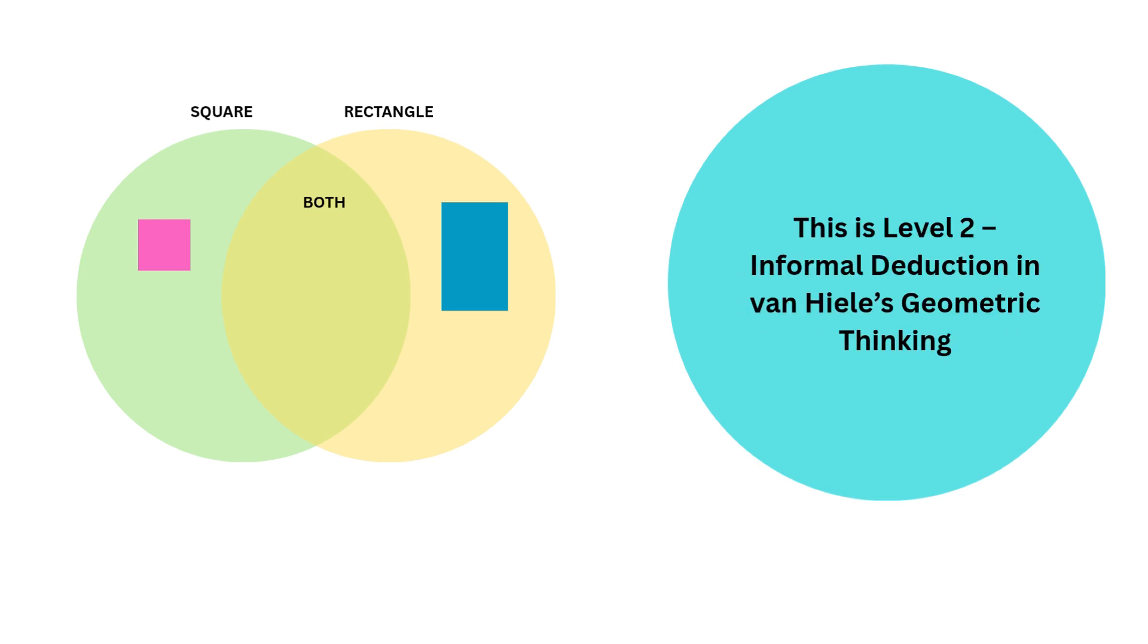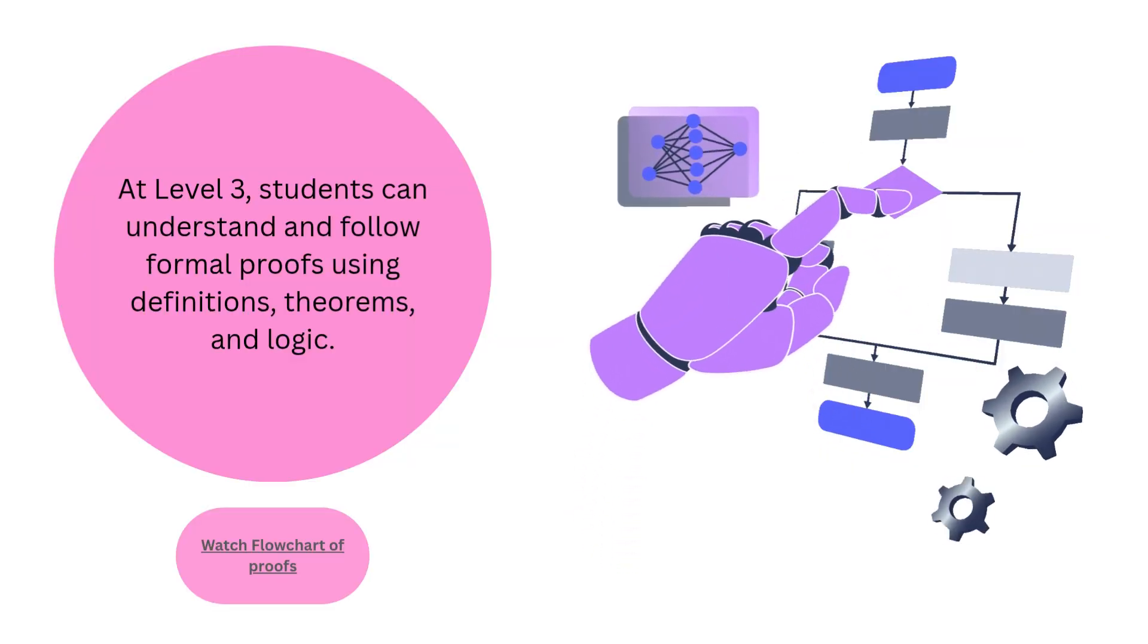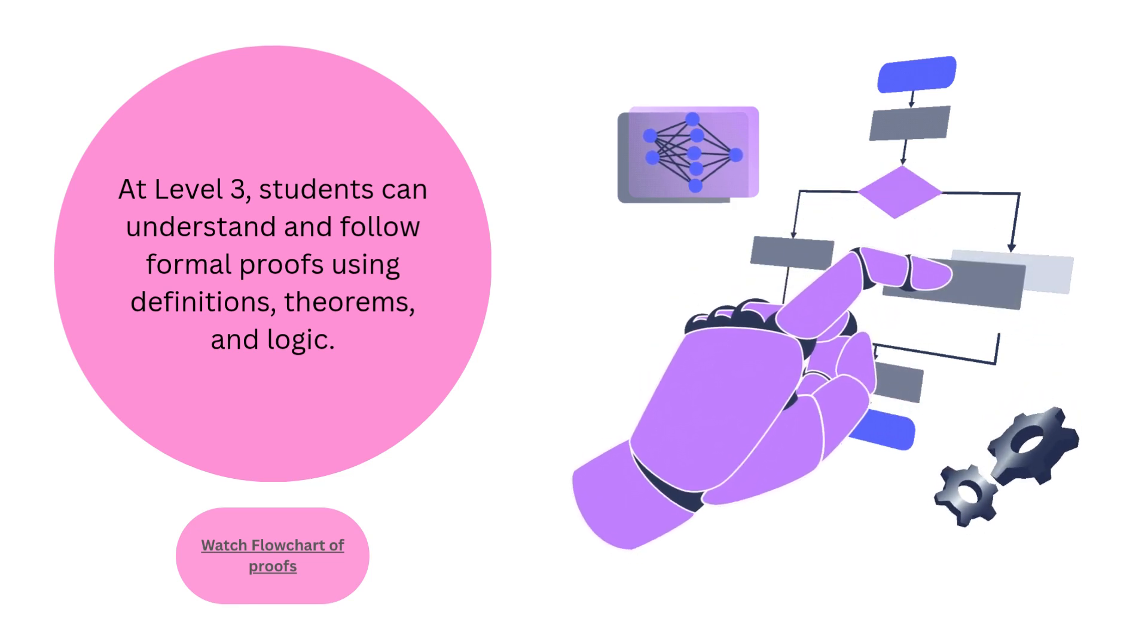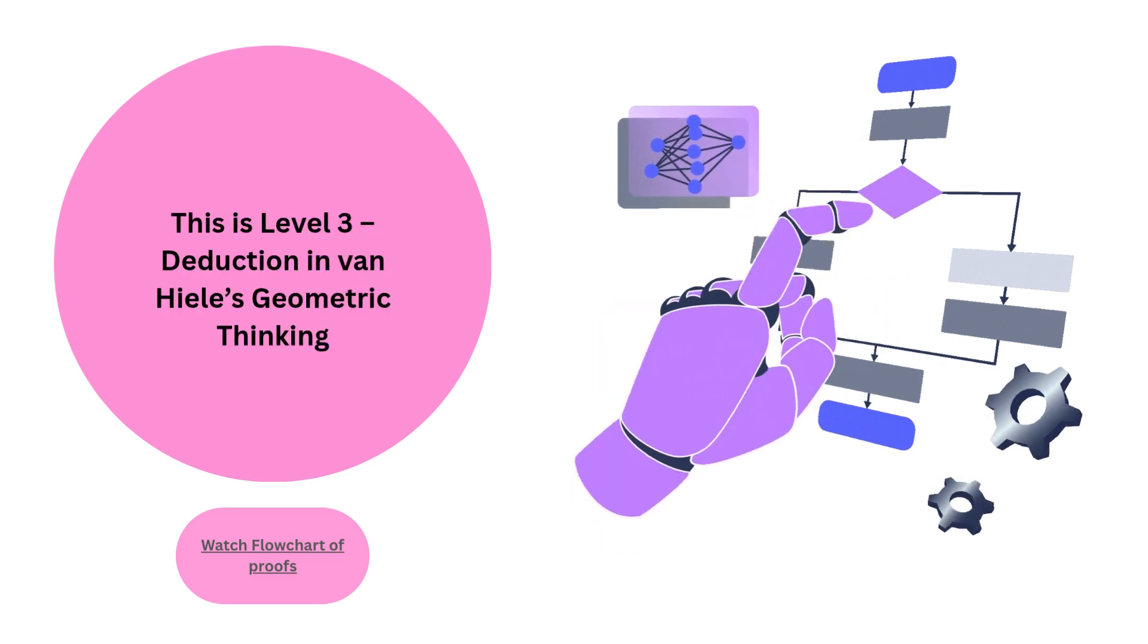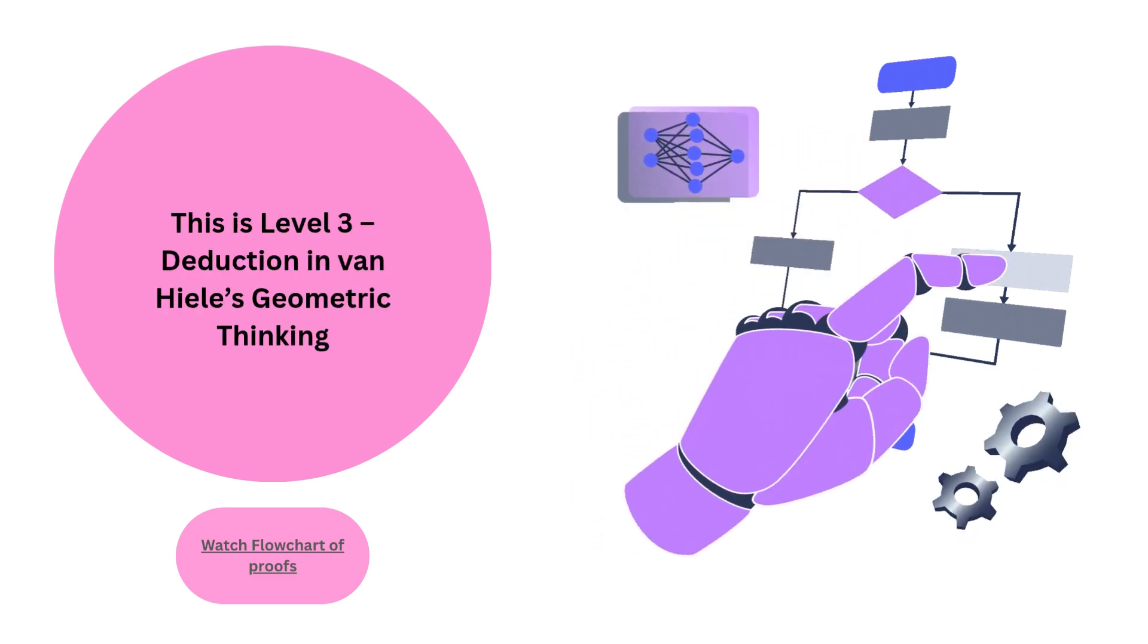This is Level 2—Informal Deduction in Van Hiele's Geometric Thinking. At Level 3, students can understand and follow formal proofs using definitions, theorems, and logic. This is Level 3—Deduction in Van Hiele's Geometric Thinking.